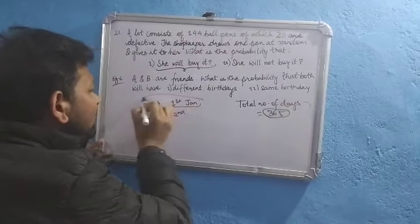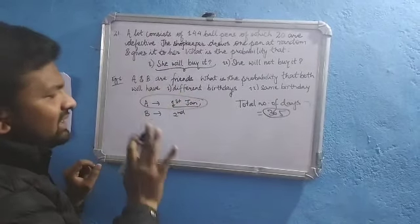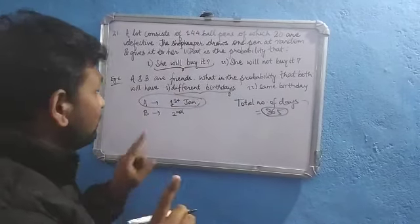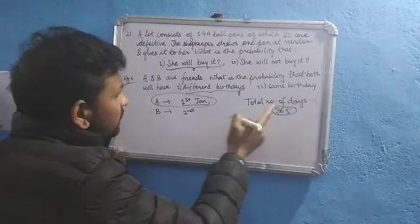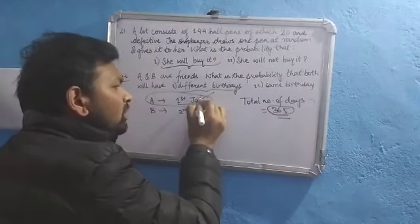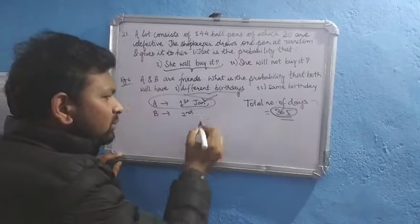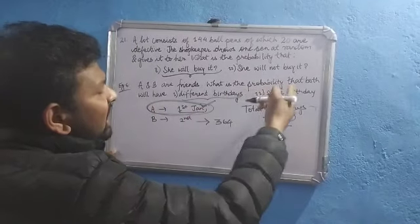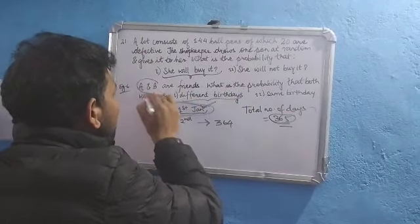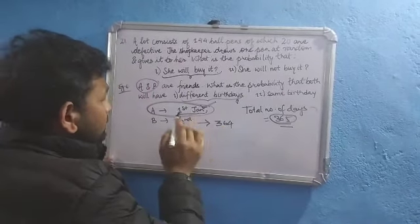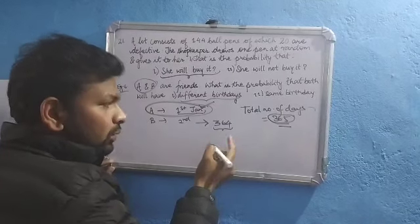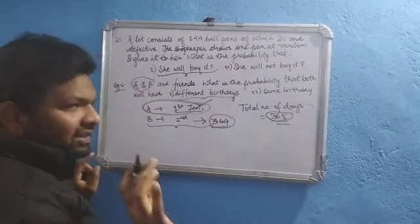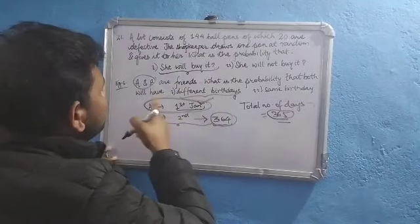Out of 365 days, on one day A will be born — for example, 1st January. So what is the probability that both will have different birthdays? B should not be born on 1st January. Out of 365 possibilities, one is already taken by A. So B is left with 364 possibilities. The number of favorable outcomes for B to be born on a different day is 364, because one day is reserved for A.